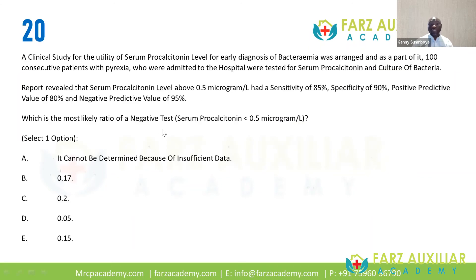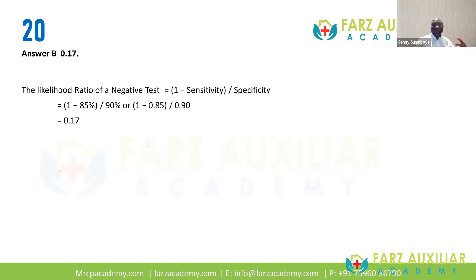Apart from positive predictive value, negative predictive value, sensitivity and specificity, we also have positive likelihood ratio and negative likelihood ratio. The formula: for a positive likelihood ratio it's sensitivity divided by one minus specificity. For a negative likelihood ratio it's one minus sensitivity divided by specificity. Unfortunately, this is one of those you just have to know. The answer ends up being 0.17, which is B.